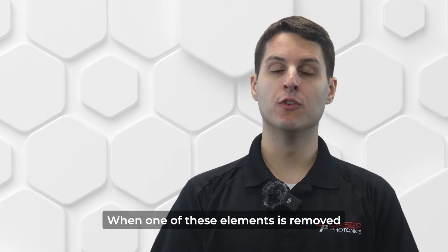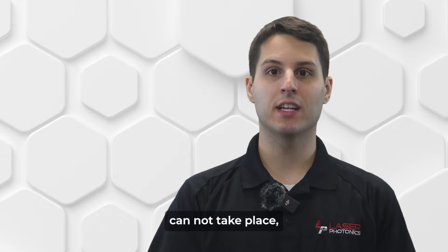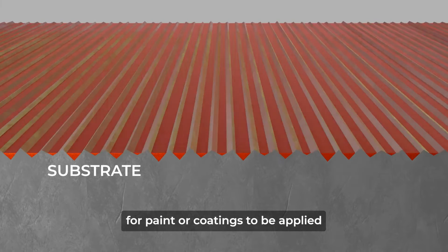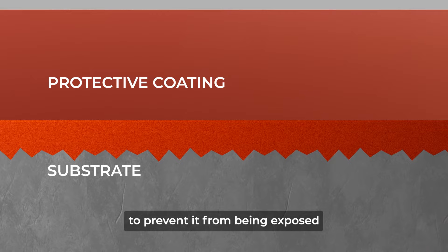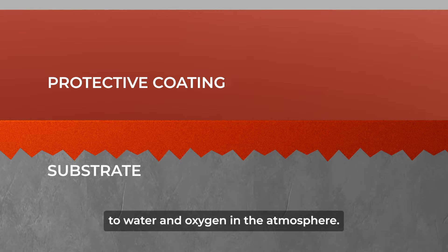When one of these elements is removed from the equation, corrosion cannot take place, which is why it's very common for paint or coatings to be applied to the surface of the material to prevent it from being exposed to water and oxygen in the atmosphere.